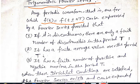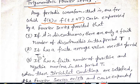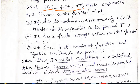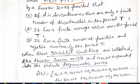There are some Dirichlet conditions for this purpose. First, if the waveform is discontinuous, there are only a finite number of discontinuities in one period T. Second, it has a finite average value over the period T. Third, it has a finite number of positive and negative maxima and minima in the duration of fundamental period T. When these Dirichlet conditions are satisfied, the Fourier series exists and can be expanded into an infinite trigonometric series.